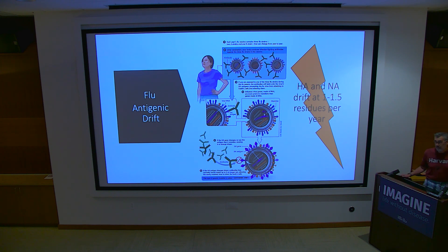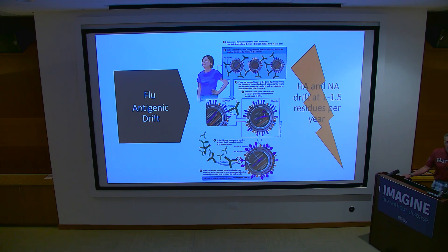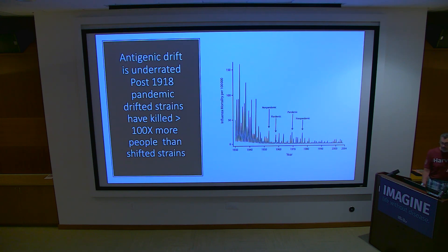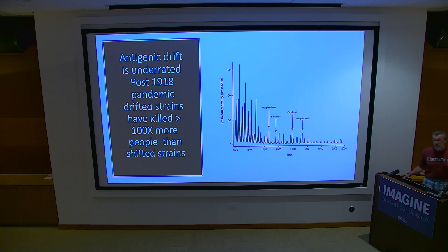On average, the two proteins subject to drift selected by antibodies — hemagglutinin and neuraminidase, the two surface proteins of a flu virion — are only changing at an average rate of one to 1.5 residues per year in the human population. It's really not very impressive, and yet this is sufficient to make flu a major public health issue.